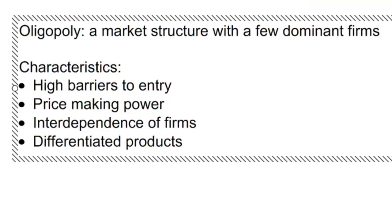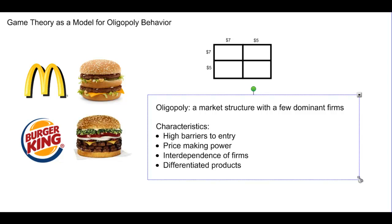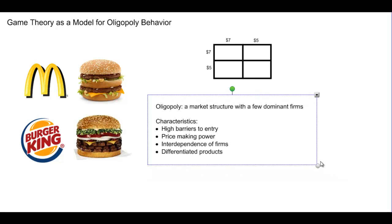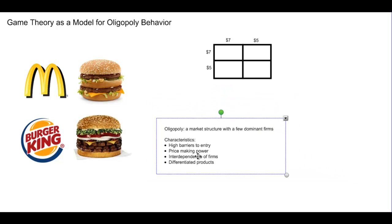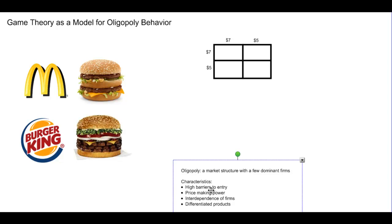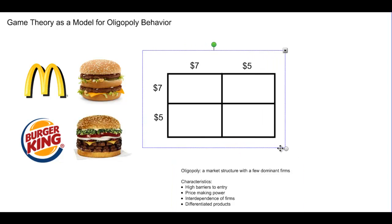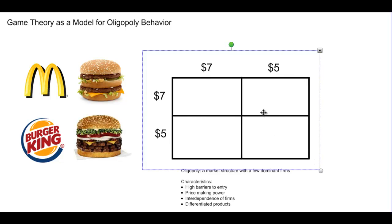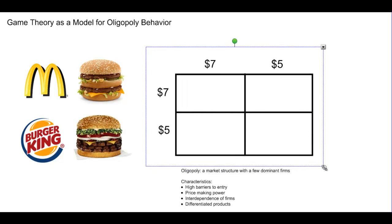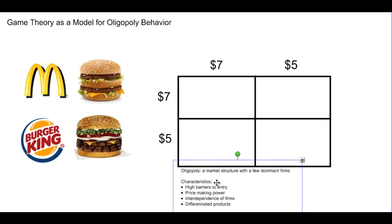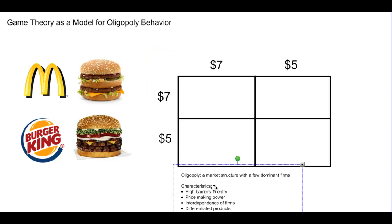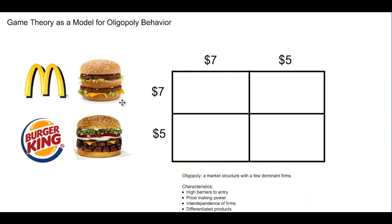With these characteristics in mind, we're going to now begin our analysis of oligopoly behavior using a tool that economists and mathematicians refer to as game theory. We're going to be studying the behavior of two firms — McDonald's and Burger King — in the market for hamburgers. The firms have a decision to make: they must decide whether they're going to charge seven dollars or five dollars for their meals.